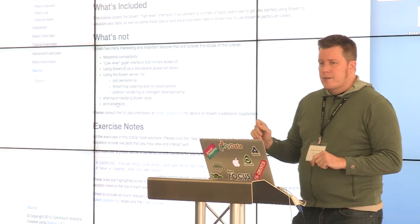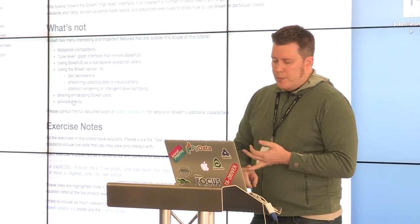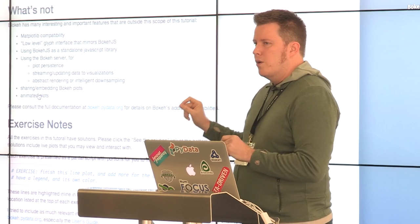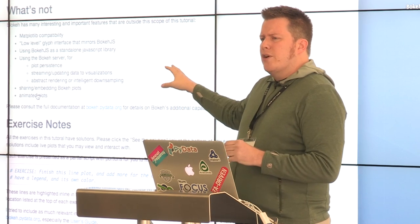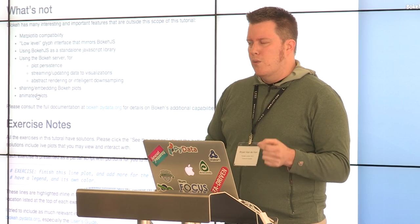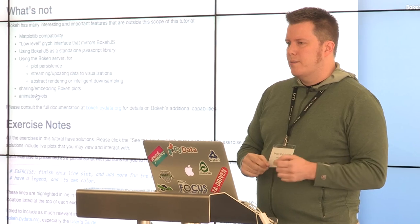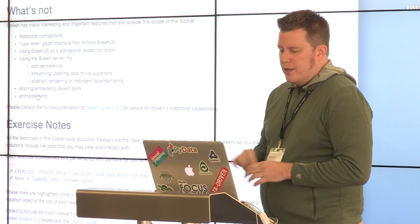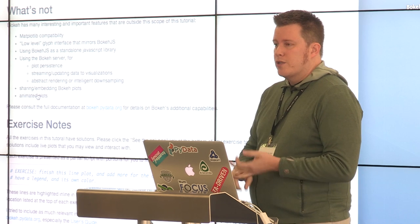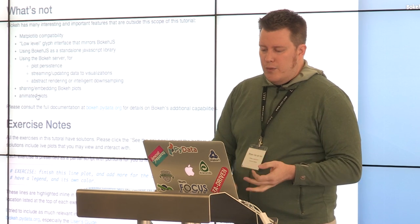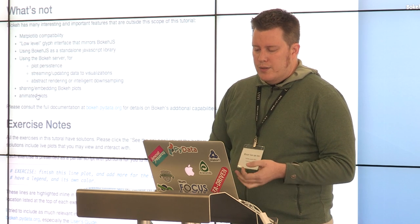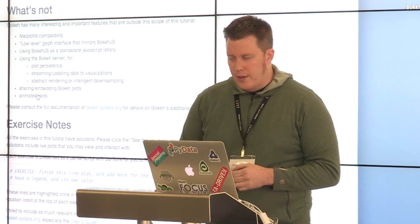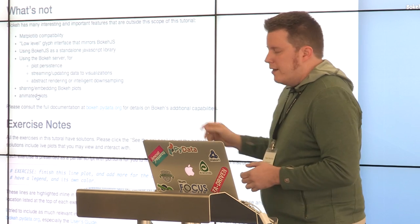Some things we aren't going to talk about in this tutorial: matplotlib compatibility — that work is ongoing. We're not going to talk about the low-level interface, and I'm not going to talk about Bokeh.js explicitly as a standalone library, although I'll probably demo something at the end. We're also not talking about the server right now — it currently uses Redis, which makes it problematic on Windows, and we're actively working to reduce that dependency.